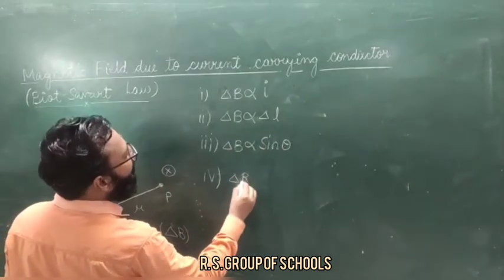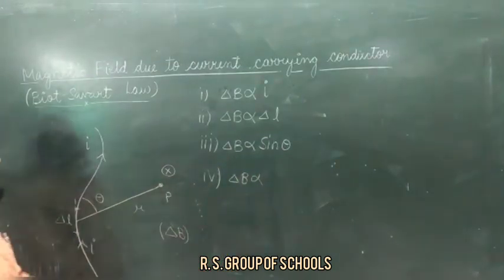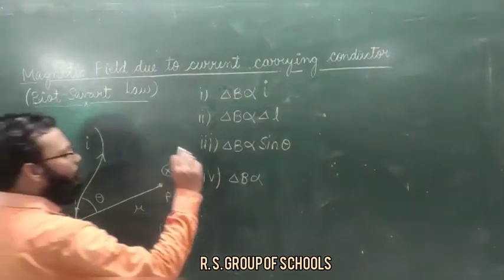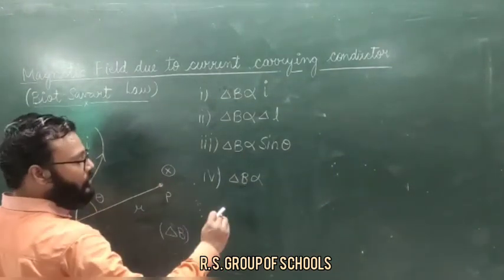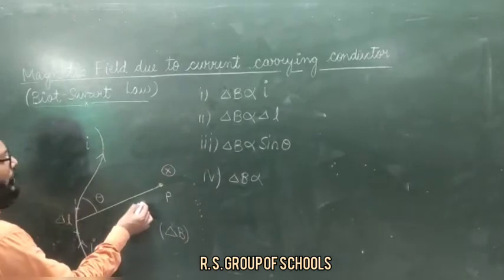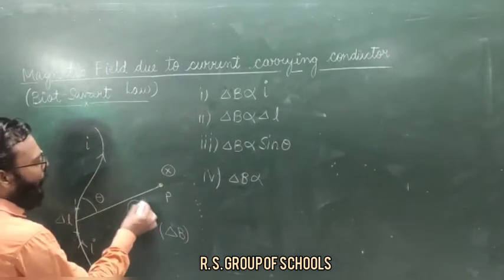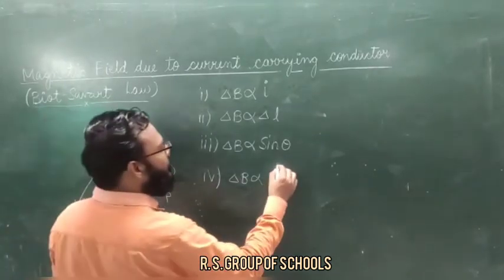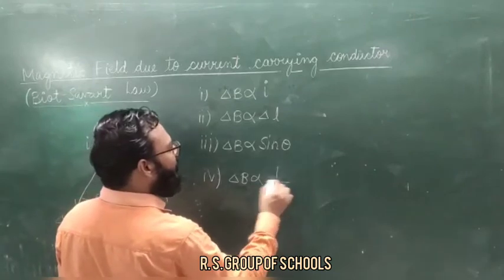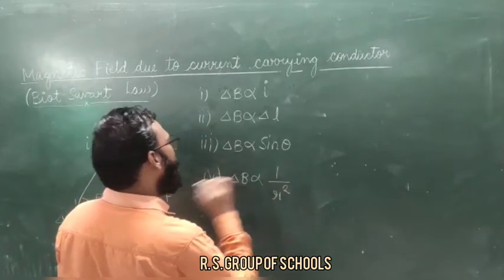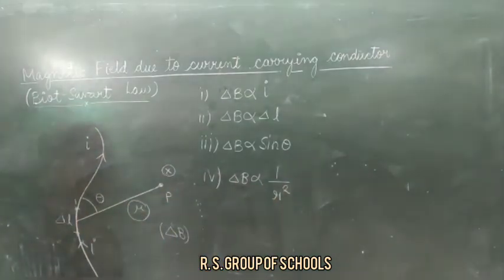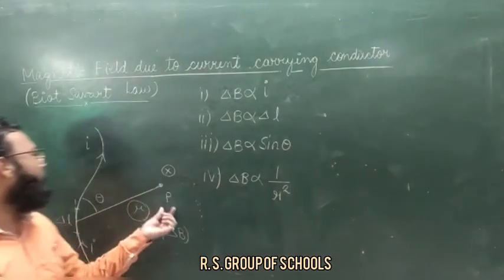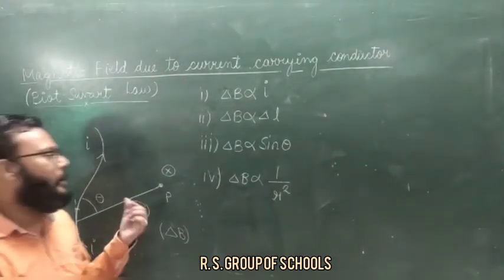The fourth factor: the magnetic field is directly proportional to 1 upon R squared. That means the magnetic field produced is inversely proportional to the square of the distance between the point and the element. So delta B is inversely proportional to R squared.